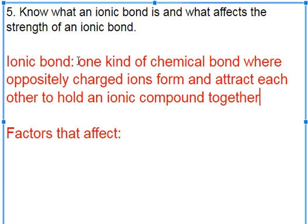So one kind of chemical bond where oppositely charged ions form and attract each other to hold an ionic compound. So you're not ever going to have an anion form if a cation doesn't form. And a cation can't form if an anion doesn't form. The electrons have to get transferred. If someone gains, somebody loses.